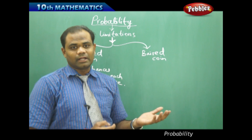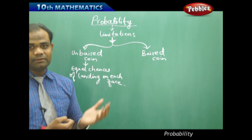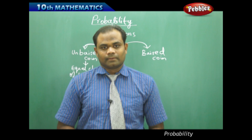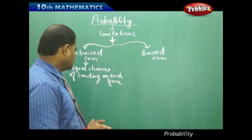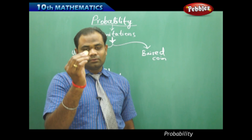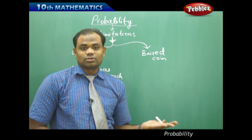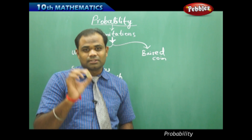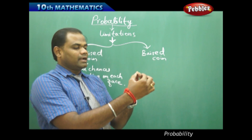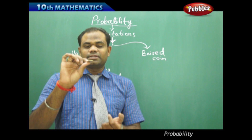For example, if I take a coin and toss it, heads should have equal chances of landing and tails should have equal chances of landing on either side. When I say an unbiased coin, the equal chances of landing either on heads or on tails are the same. How realistic this outcome is depends on using a fair coin.